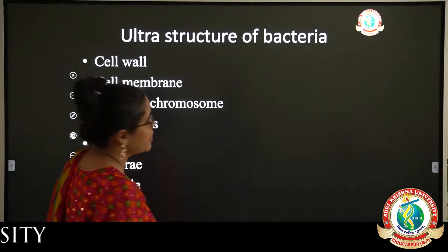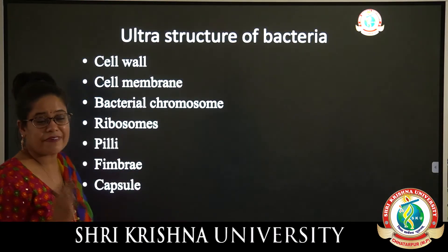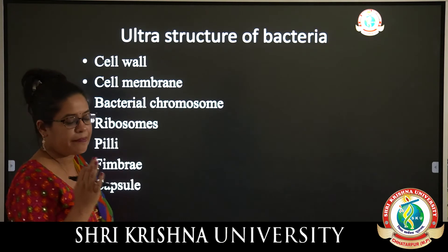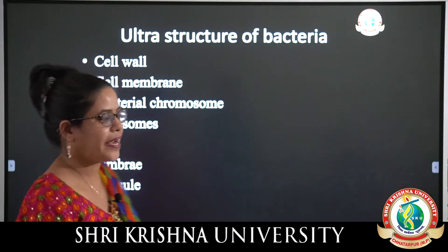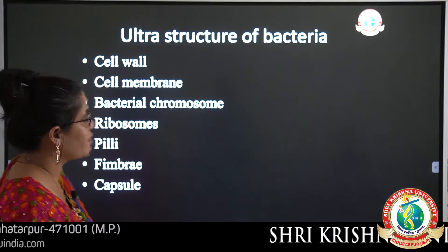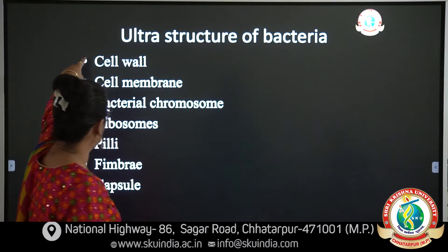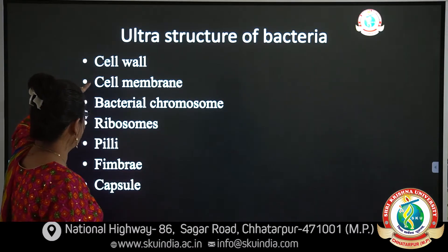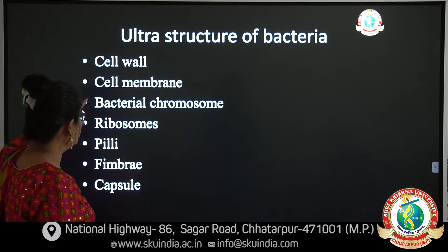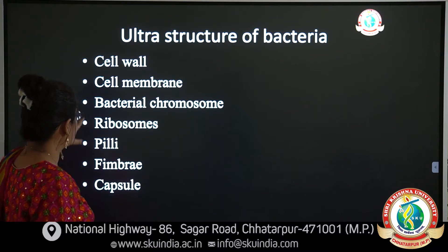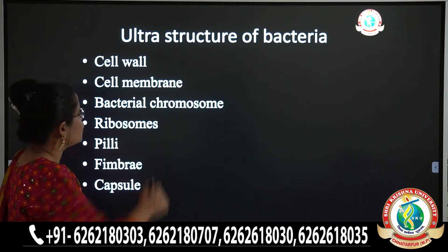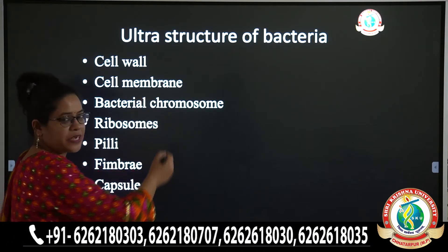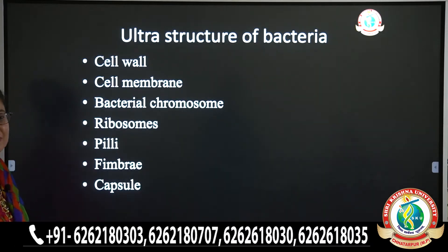In the ultrastructure of bacteria, there are specific structures that make the bacteria unique and able to live in a variety of diverse habitats. These are the cell wall, the cell membrane, the bacterial chromosomes, ribosomes, pili, fimbriae, and capsules. We are going to study each of these specific structures in detail.